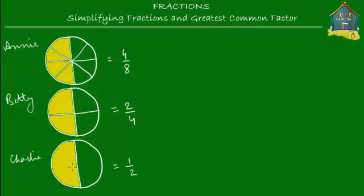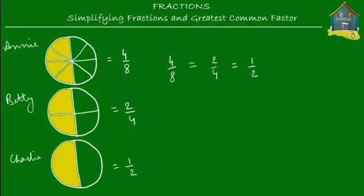Now if you look carefully, do you see a relation among the three pizzas — among Annie's share, Betty's share, and Charlie's share? Do you see a relation in the three yellow shaded parts? What I see quite obviously is that the yellow part in the first pizza is the same as the yellow part in the second pizza, which is the same as the yellow part in Charlie's pizza. So 4/8 is equal to 2/4, which is equal to 1/2.